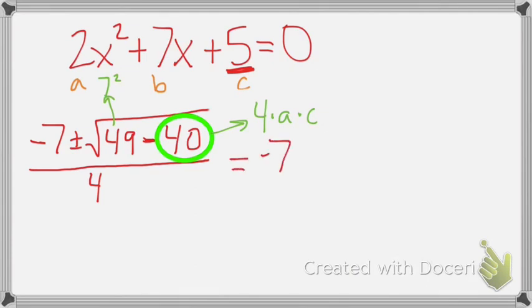Alright, so we have negative 7 still, plus or minus still. Well, the square root, though, now that's going to change to a 9, 49 minus 40. Okay, and then divide it by 4.